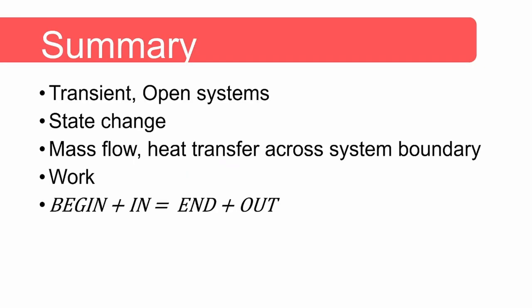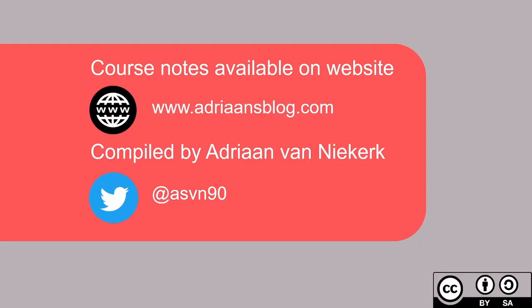In summary, we considered transient open systems where the state changes from state one to state two. Mass flow and heat transfer can take place across the system boundary, and the volume can change resulting in boundary work. Conservation of mass requires that the mass at the beginning plus the mass flowing in equals the mass at the end plus the mass flowing out — and this is also true for energy.